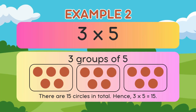Example 2: 3 times 5. That means 3 groups of 5. 1, 2, 3. There are 5 circles in each group. There are 15 circles in total. Hence, 3 times 5 equals 15.